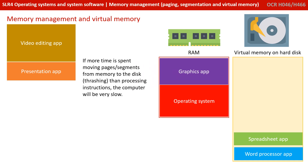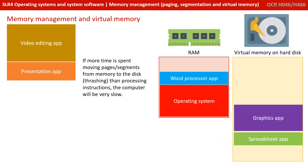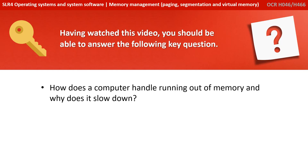When these instructions are needed again, a different program can be swapped out of RAM to virtual memory to make room for the instructions that are now needed. This gives the impression that a computer has more memory than it actually has. Having watched this video, you should be able to answer the following key question: how does a computer handle running out of memory, and why does it slow down?